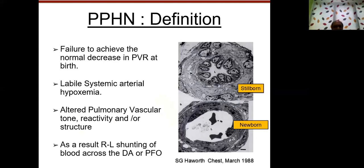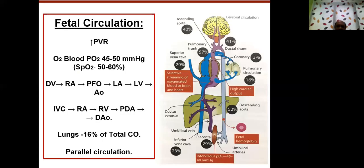Coming to the definition of PPHN: it is a failure to achieve the normal decrease in pulmonary vascular resistance, leading to a very labile systemic arterial hypoxemia. This is due to altered pulmonary vascular tone, reactivity, or structure. As a result, there is right-to-left shunting across the ductus arteriosus as well as the foramen ovale.